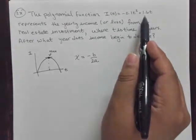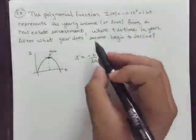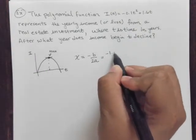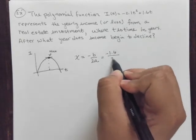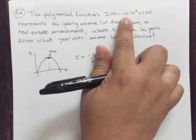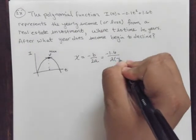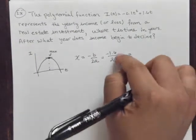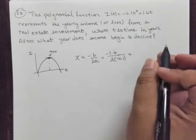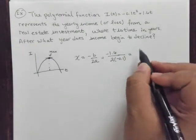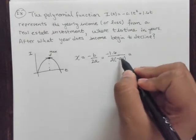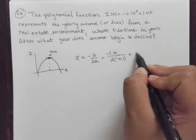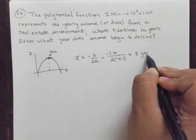In this case, b is simply 1.6, so opposite b is negative 1.6, divided by 2 times a, which is this negative 0.1 factor, negative 0.1. The answer here is a positive quantity — negative divided by negative is positive — so it is, in fact, after 8 years.